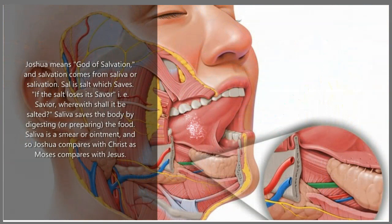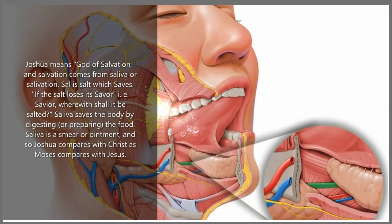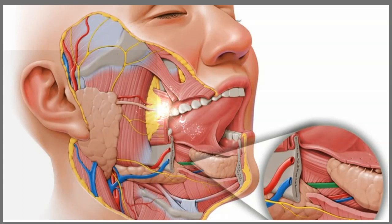Joshua means "God of salvation," and salvation comes from saliva, or salivation. Sal is salt which saves. "If the salt loses its savor, i.e., Savior, wherewith shall it be salted?" Saliva saves the body by digesting, or preparing, the food. Saliva is a smear, an anointment, and so Joshua compares with Christ, as Moses compares with Jesus.